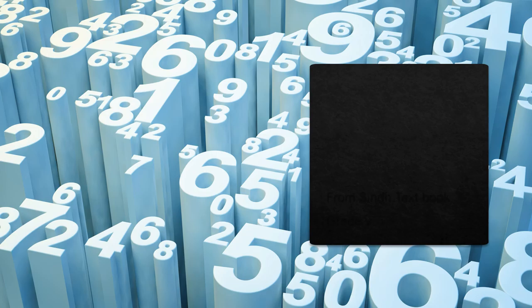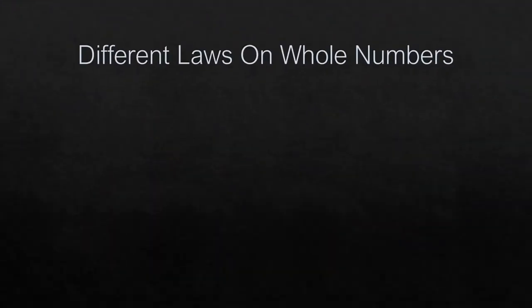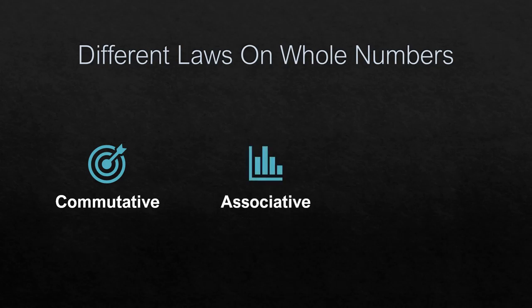Assalamu alaikum, Class 5. This is Chapter 2, Whole Numbers, from the Syntax book, Class 5. The topic is different laws on whole numbers. Number one is commutative, two is associative, and the third one is distributive.